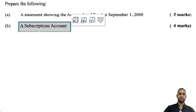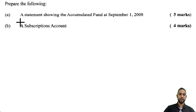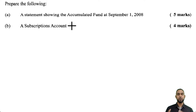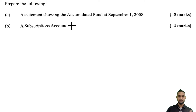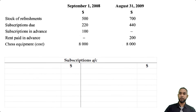Part B is asking us to do a subscriptions account for four marks. A subscriptions account is a revenue account — it's a T-account. If you want to see my video on how to do revenue accounts I'll put a card up there and a link in the description below, or just stay along and I'll tell you what to do.